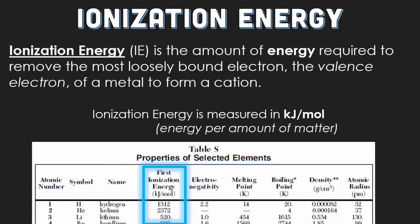Ionization energy, also referred to as IE, is the amount of energy required to remove the most loosely bound electron, the valence electron, of a metal to form a cation. Ionization energy, which is also found on table S, along with atomic radius, is measured in kilojoules per mole, or the amount of energy per amount of matter.